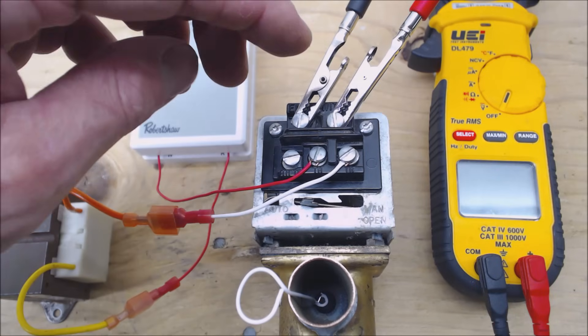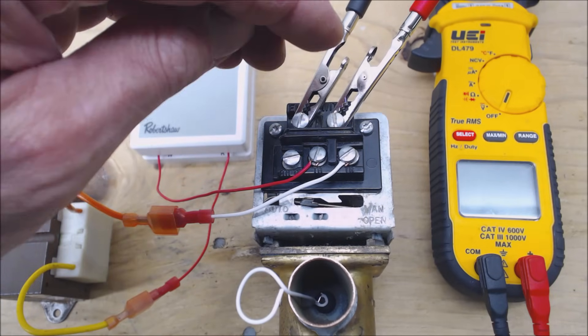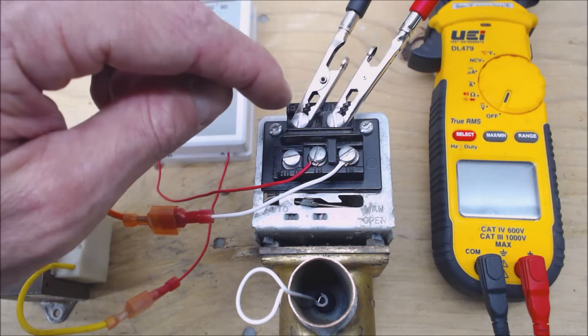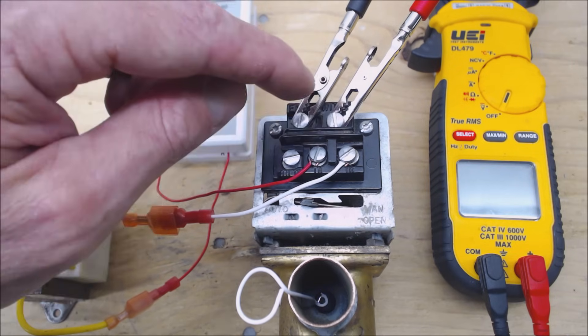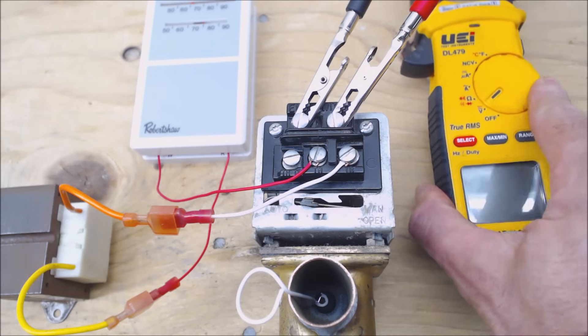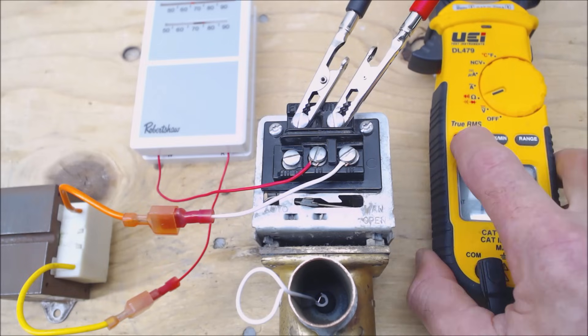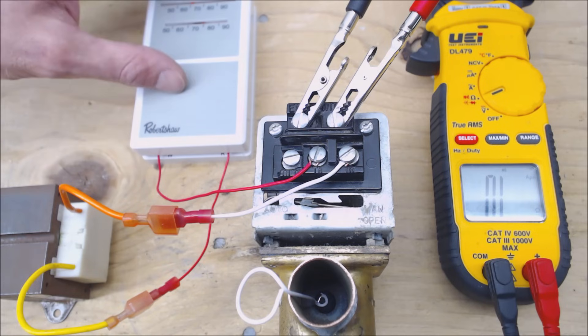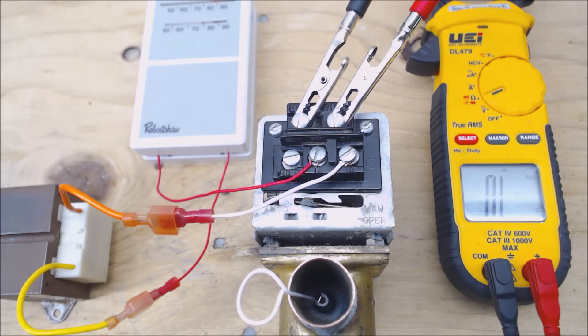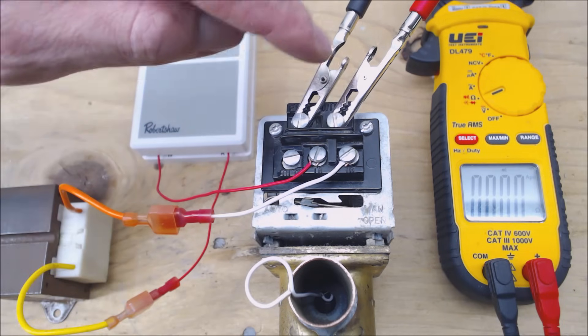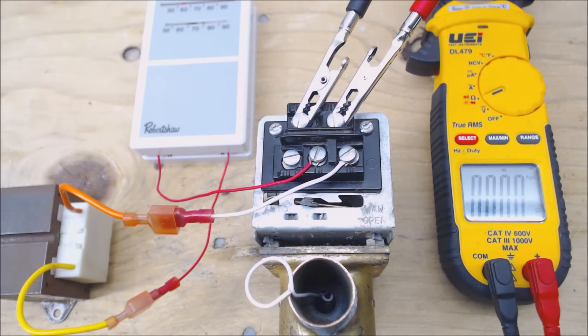So now we're going to power this with 24 volts and we're going to read a continuity reading across our end switch terminal right here and here and let's go ahead and turn our multimeter on and now we're going to apply 24 volts to the motor with our thermostat. So our motor is turning right now and you should be able to see this wire move a little bit. So now our zone valve has opened all the way and our end switch is closed. We read 0.0 ohms of resistance.